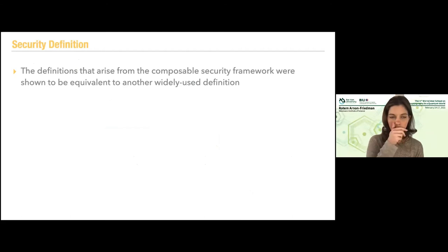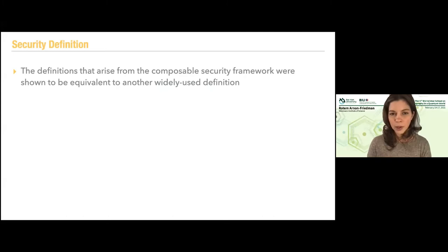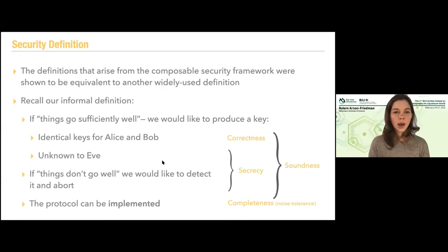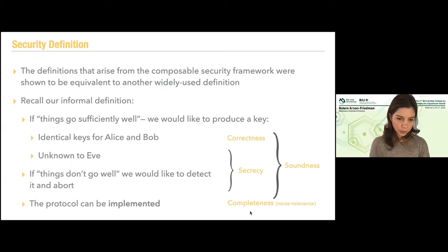The definitions from composable security frameworks were also shown to be equivalent to another widely used definition — the trace distance definition. If you recall our informal definitions: identical keys was correctness; key unknown to Eve (or detecting and aborting otherwise) was secrecy; together this is soundness; and the protocol can be implemented is completeness.